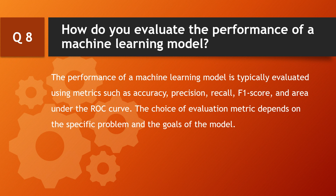Question: how do you evaluate the performance of a machine learning model? The performance of a machine learning model is typically evaluated using metrics such as accuracy, precision, recall, F1 score, and area under the ROC curve. The choice of evaluation metric depends on the specific problem and the goals of the model.